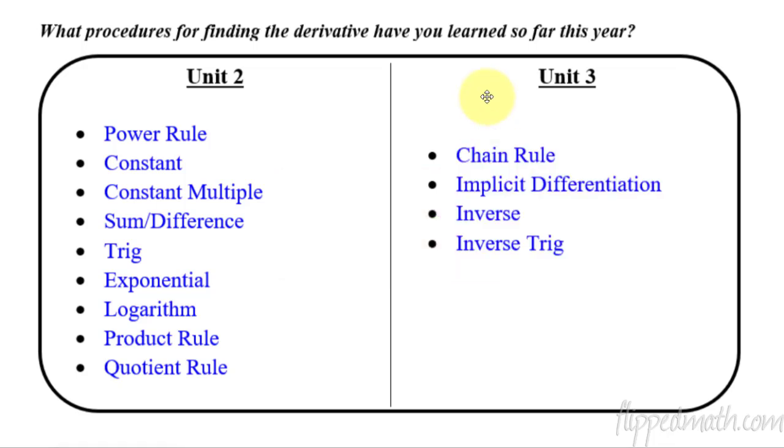And there we go. We've done the chain rule, where we have a function inside of a function, or composition of functions. We've done implicit differentiation—instead of solving for y and taking the derivative, we just take the derivative and get dy/dx. We've done the inverse, where you have 1 over f prime of f inverse. And then inverse trig, which we did just this last lesson.